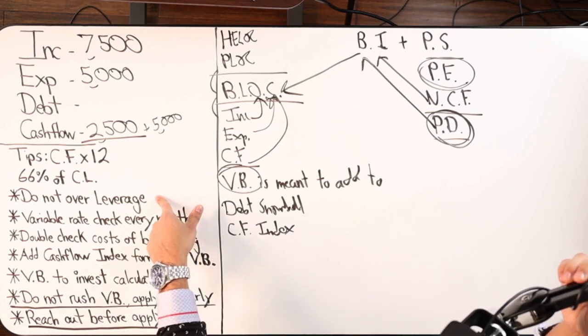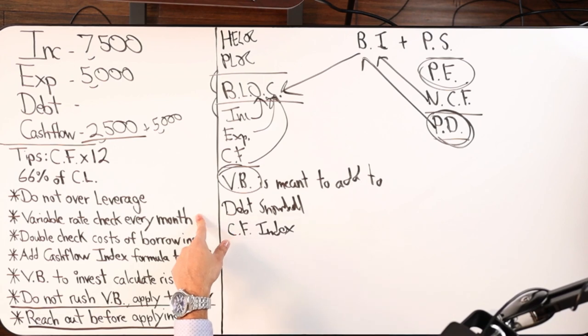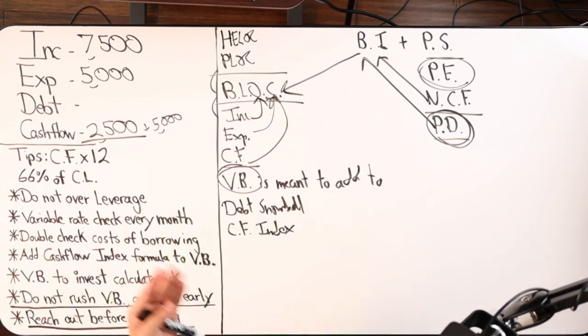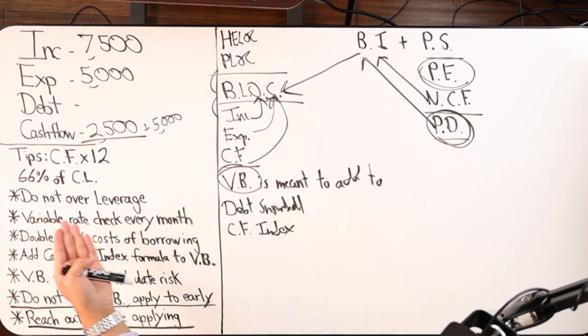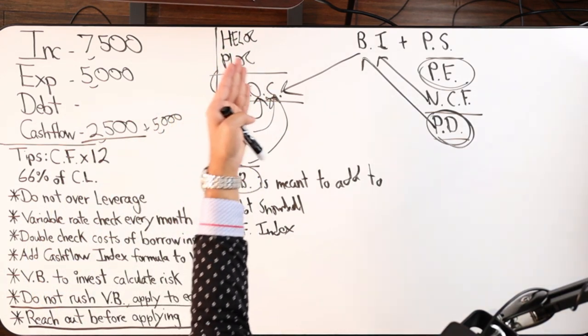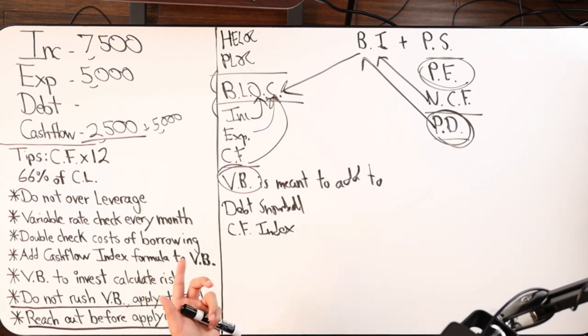Do not over-leverage. We are in a high interest rate environment and interest rates have been going up consistently all through 2022 and 2023. You're going to want to check your rate if you have a home equity line of credit, a PLOC, a credit card that you're using to do velocity banking. Please check your rate every single month because that's typically how often they're changing.